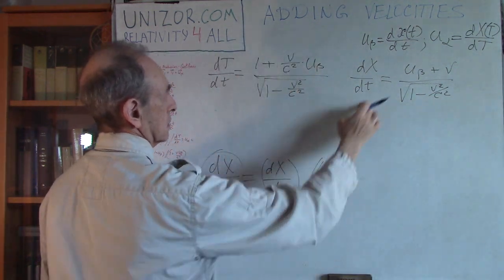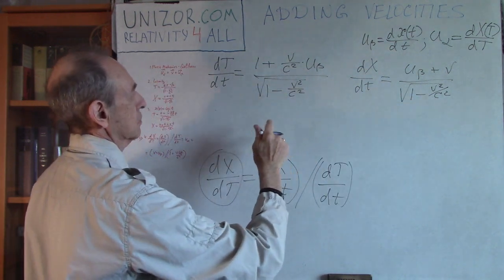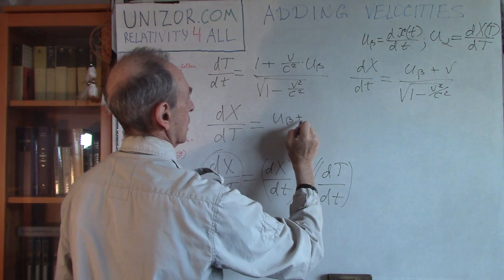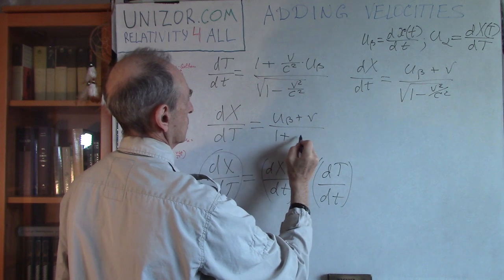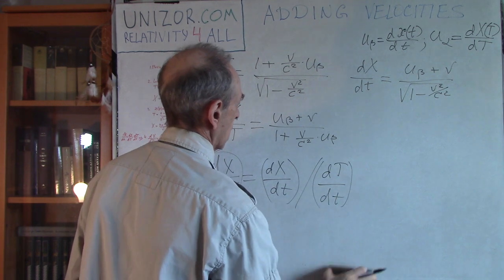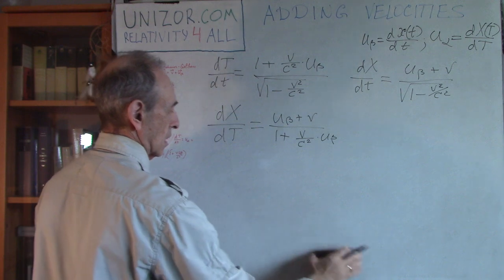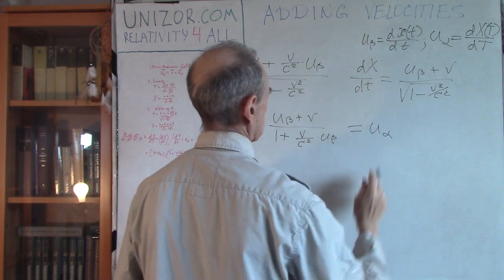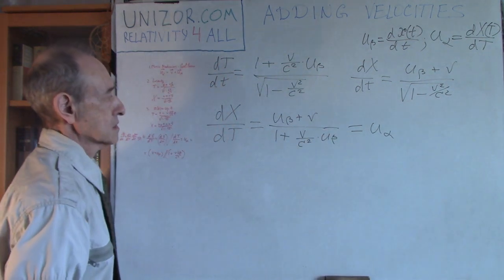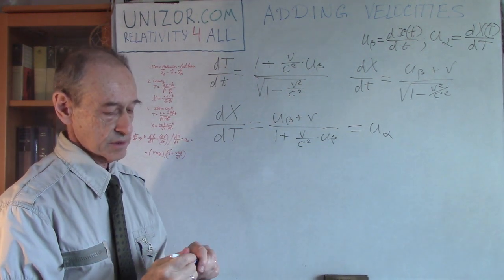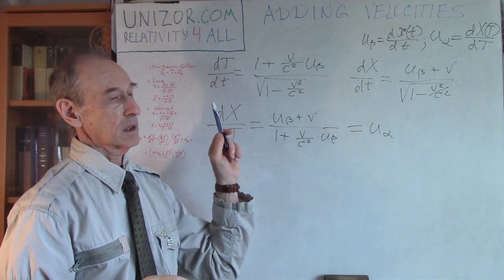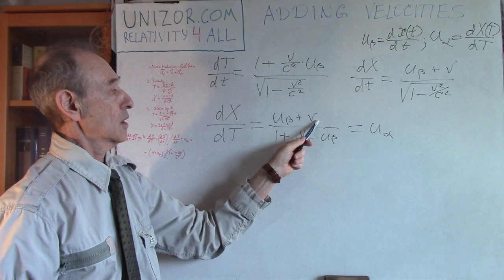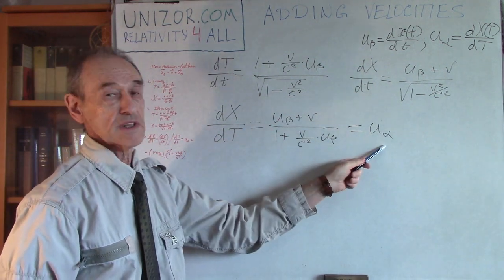If I divide dX/dT by this one, square root goes out. My dX/dT is equal to (u_beta + v) divided by (1 + v/c² * u_beta). And this is the final speed of the object relative to alpha frame, which is u_alpha. That's how we obtain the combined, the composite speed. The speed local within the beta system is u_beta. The speed of the whole beta system relative to alpha is v, which brings us to this formula as the speed of this object relative to alpha.